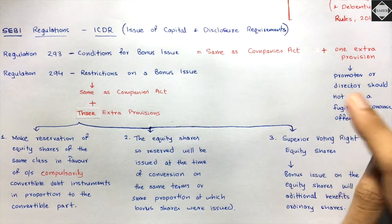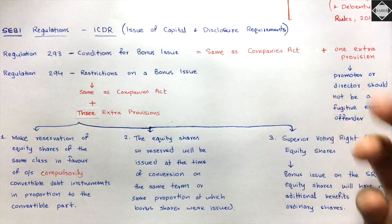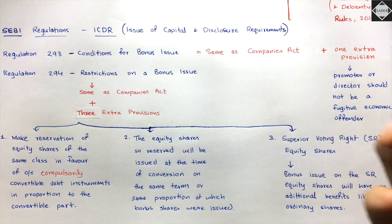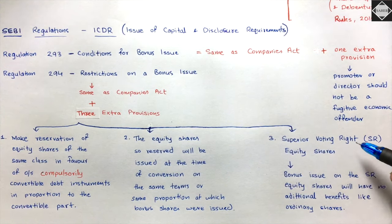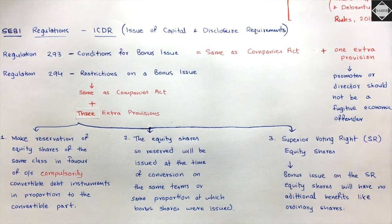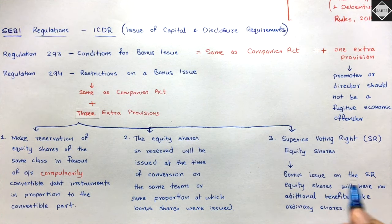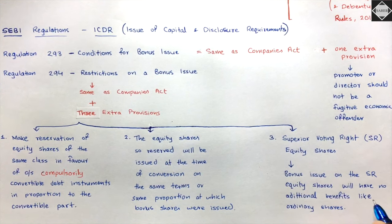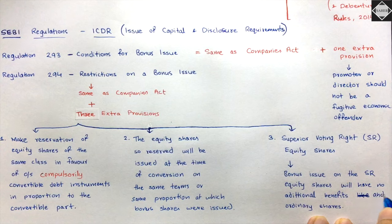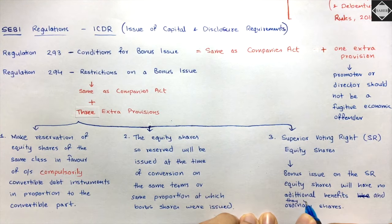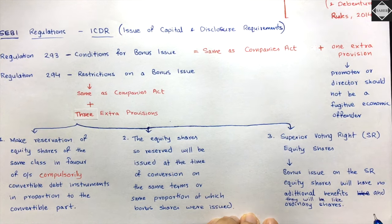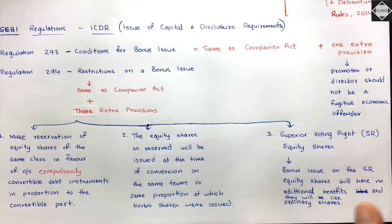Third extra provision in Regulation 294: regarding superior voting right (SR) equity shares - these shares have at least 2 votes per share and are given to promoters/founders to retain control after IPO. Bonus issue will be given on SR equity shares, but those bonus shares will be ordinary shares only - they will have no additional benefits.